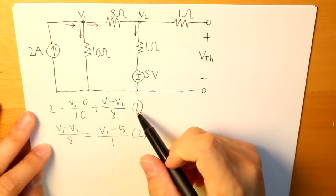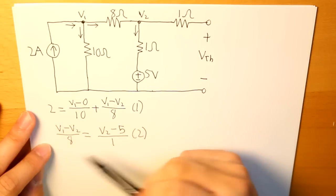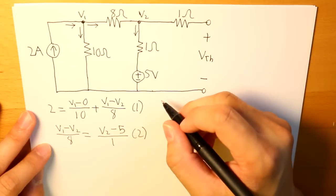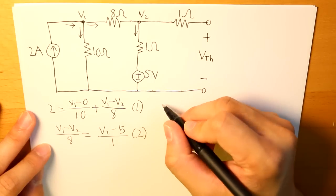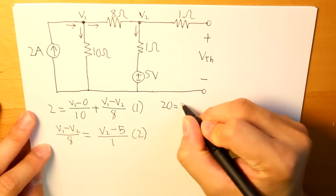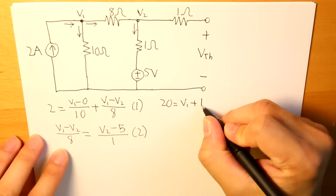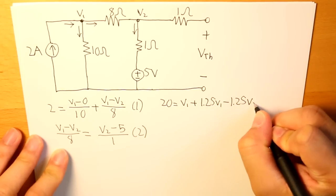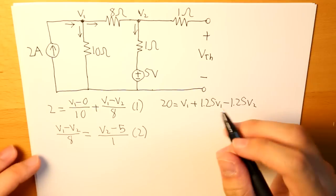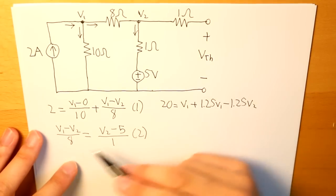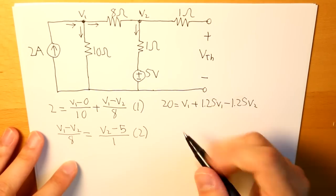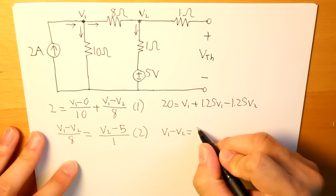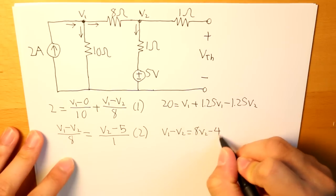So in equation 1, let's multiply both sides by 10, and for equation 2, let's multiply both sides by 8. So what we're going to get is, for equation 1, we have 20 equals to V1 plus 1.25 V1 minus 1.25 V2. And then for equation 2, we're multiplying 8 by both sides. What we get is V1 minus V2 is equal to 8 V2 minus 40.